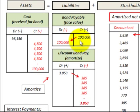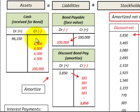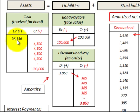Let's look at our example: we have a $100,000 face value bond, a 9% stated rate of interest, for five years, which gives us ten semi-annual payments. When we issue that bond, we received $96,150 in cash. That's based on discounting the $100,000 face value — the maturity value plus the interest payments — using the market rate of interest, which in this case is 10% per year.